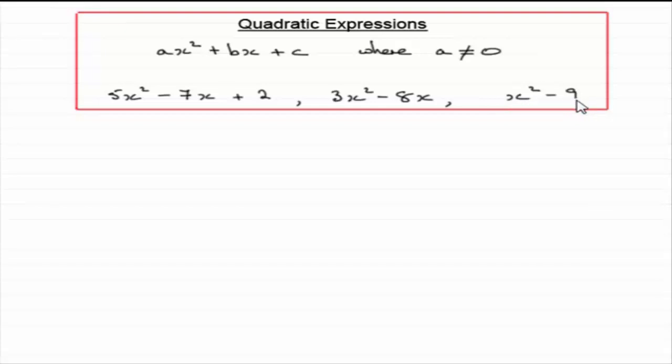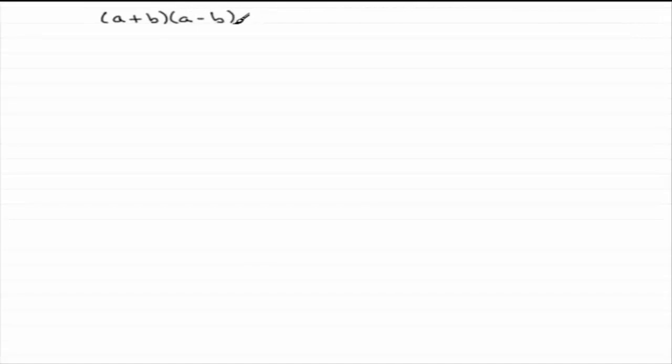What we're going to do in this tutorial is look at expressions like this. But in order to do this, what we need to do is just step backwards for a moment. Let's have a look at expanding two brackets of the form a plus b times a minus b. Let's see what we get.